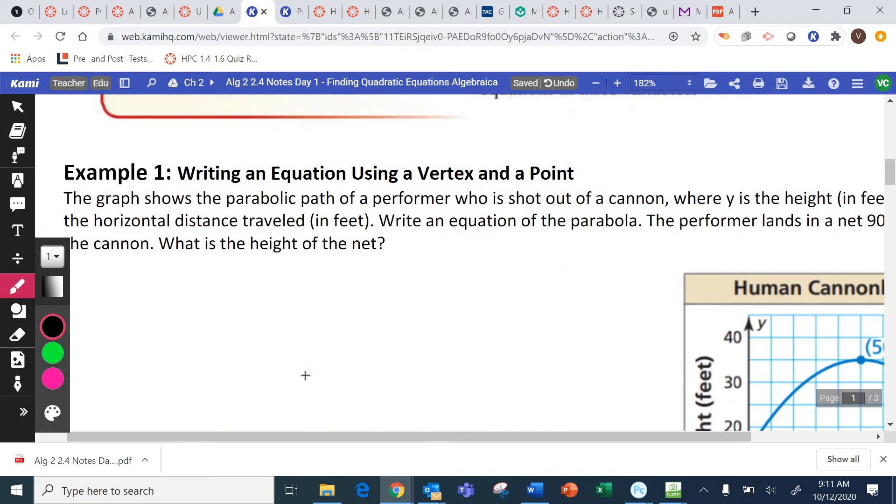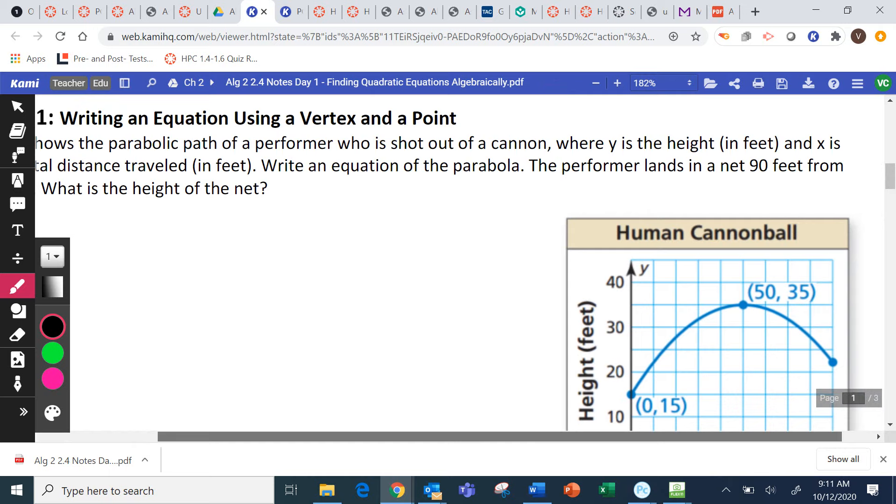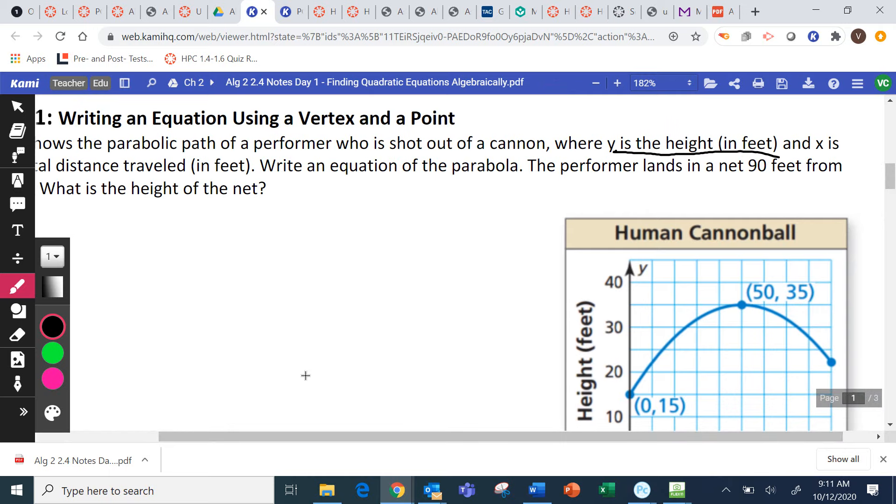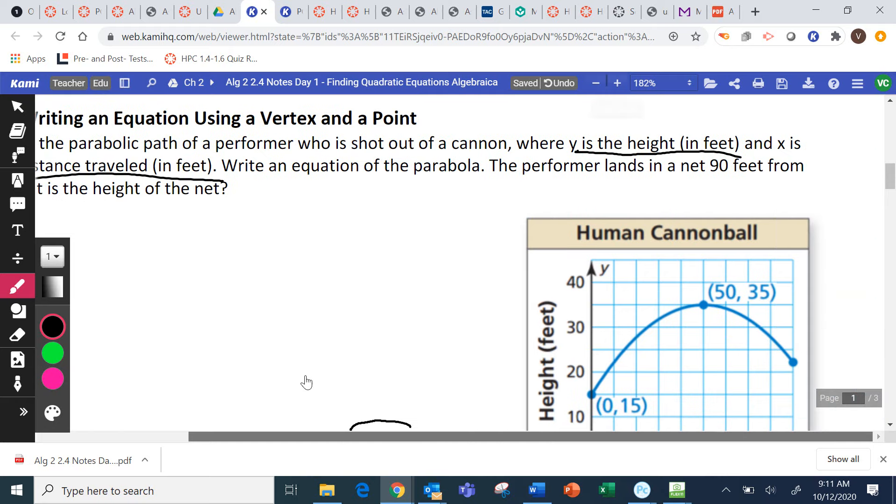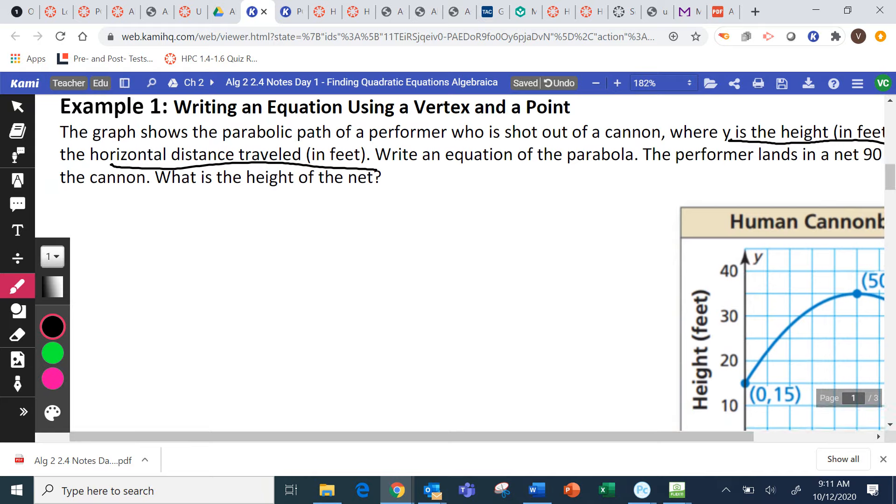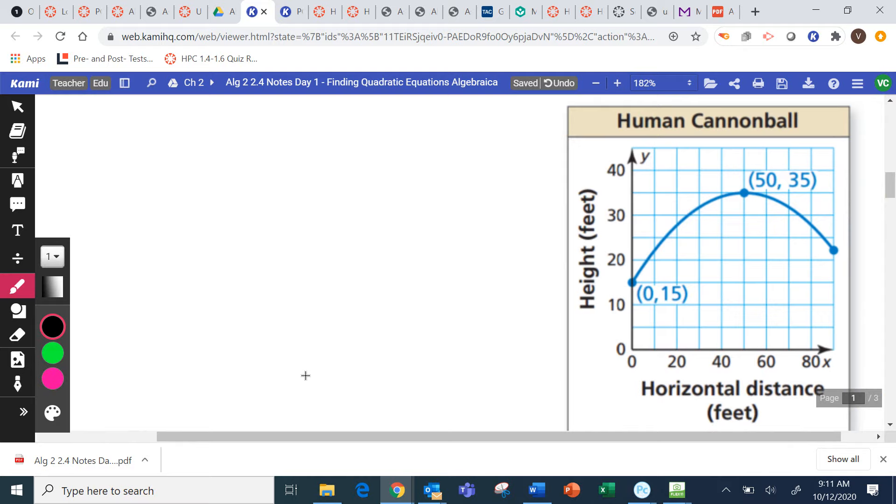So our first equation is to write an equation given a vertex and a point. Here we have an equation that shows a path of a performer who shot out of a cannon, where y is the height in feet, and x is the horizontal distance traveled in feet. We're going to write the equation of the parabola. So if you look at the picture, what we want to find is the vertex and a point on that graph. And look, they've labeled two points for us.